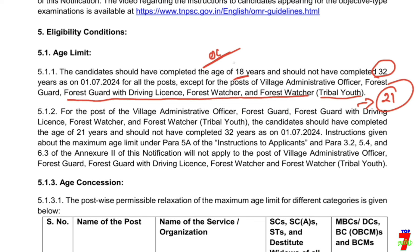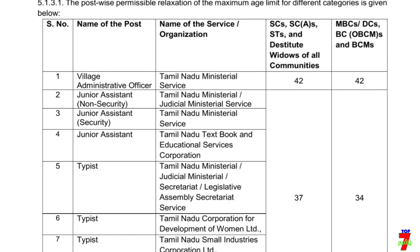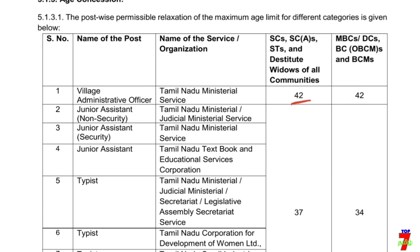Let's see the regular age limit. If you choose the right age limit, you have a minimum age limit. Now, this is the age limit — as you can see, MBC, DC, BC category is 62. Minimum age limit is 21. If you have VIO, the minimum age limit is 21 and maximum age limit is 62.